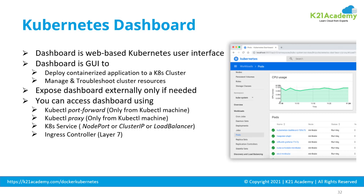One method is kubectl port-forward, and the second method is kubectl proxy. These two methods are accessible only from a machine where you have installed kubectl and have the kubeconfig downloaded. This is the typical way you use the command-line interface from the same machine.